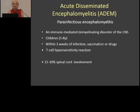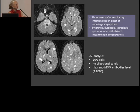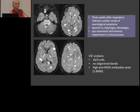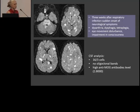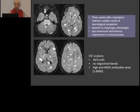Let's move to acute disseminated encephalomyelitis — ADEM. There is not so much new about this disease, but it is one major differential to multiple sclerosis. It's also called para-infectious encephalomyelitis. These are usually children who come after a viral infection. A typical case: an 11–12-year-old girl, three weeks after respiratory infection, had neurological symptoms and a typical MRI with big lesions not close to the ventricle, lesions in the gray matter, diffuse pons involvement, no oligoclonal bands, and very high anti-MOG antibodies — one of the important tests in ADEM.